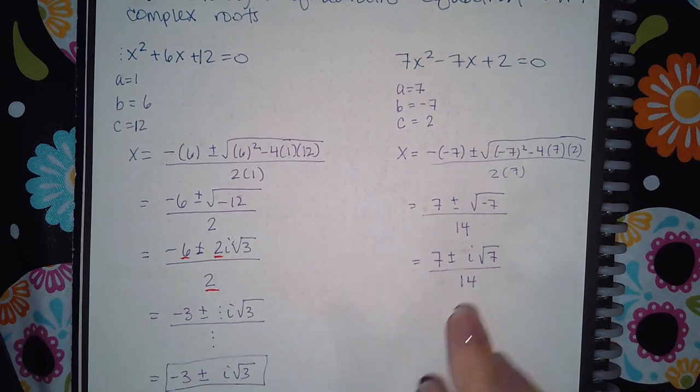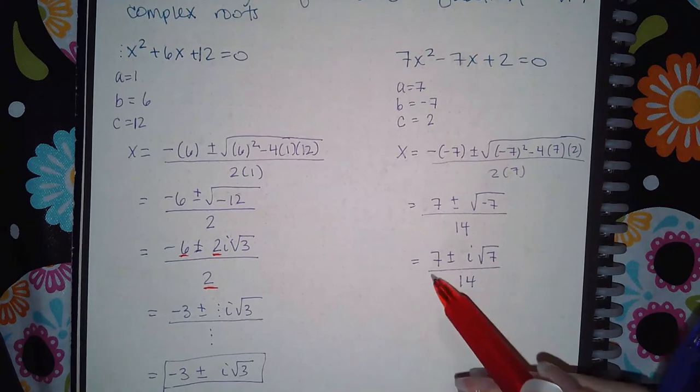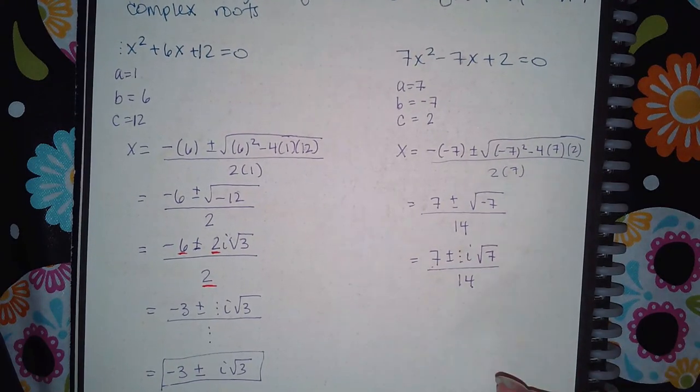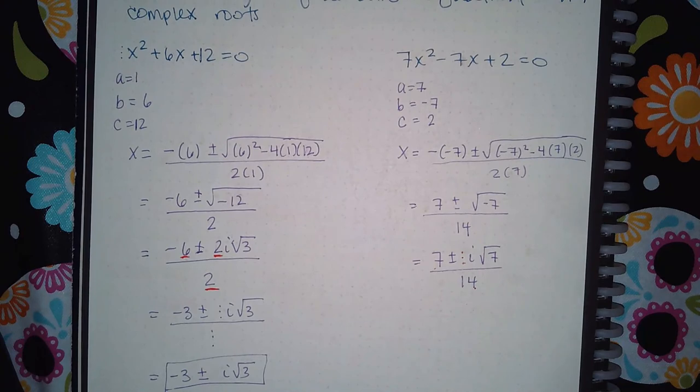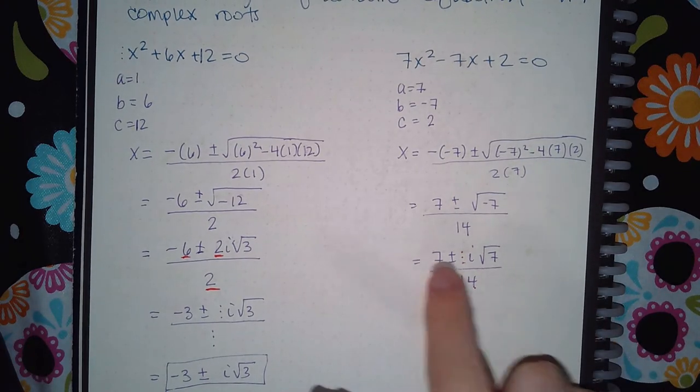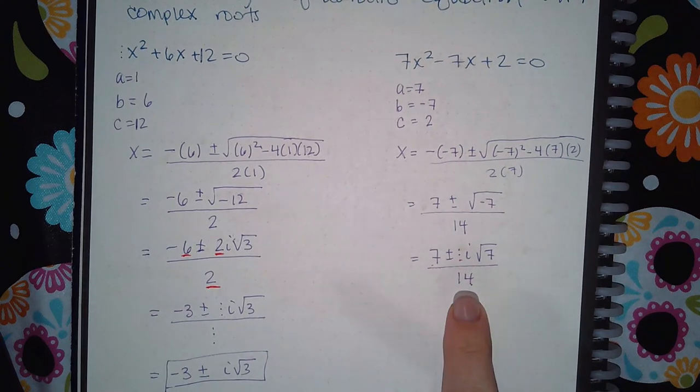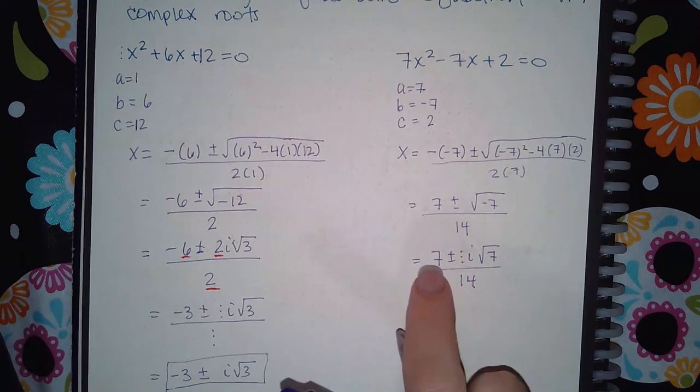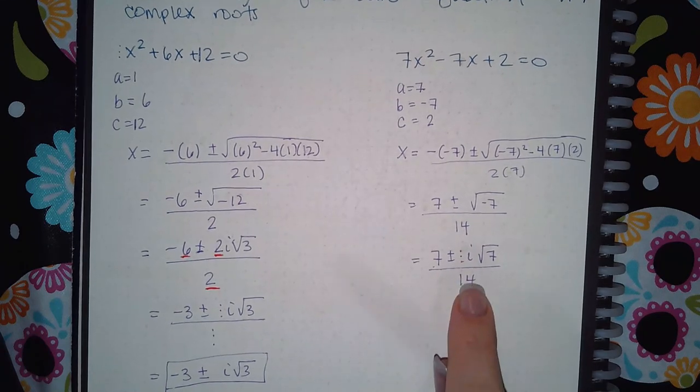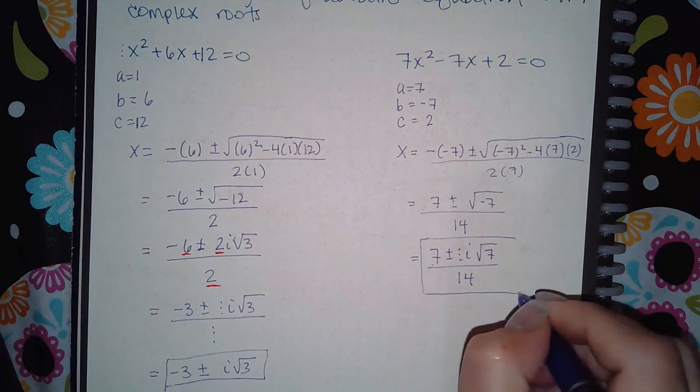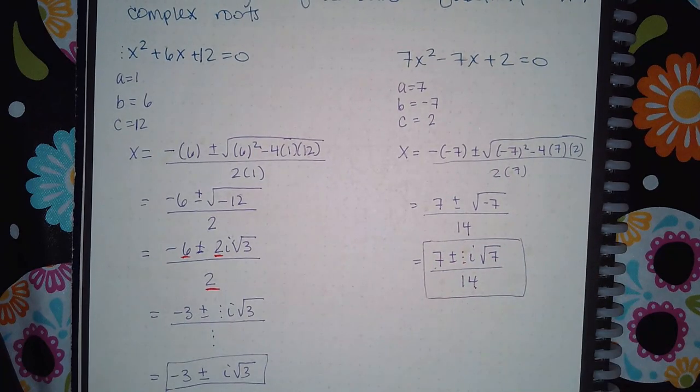Now here, unfortunately, the 7 and the 14 can reduce, but because this coefficient of 1 cannot be reduced, you do not go any further, okay? All 3 have to be divisible by the same thing in order for you to reduce that fraction. And since not all 3 can be reduced, you leave the fraction as is. So this is the simplified version of that fraction.